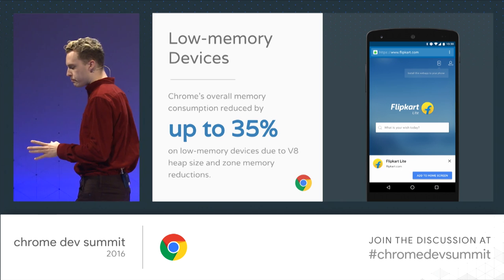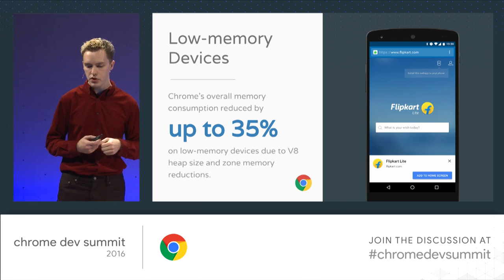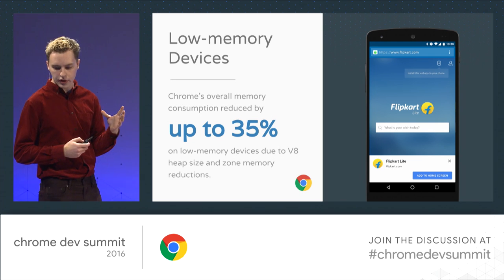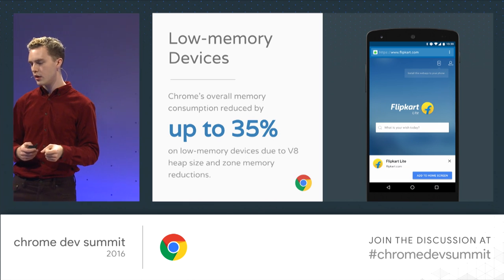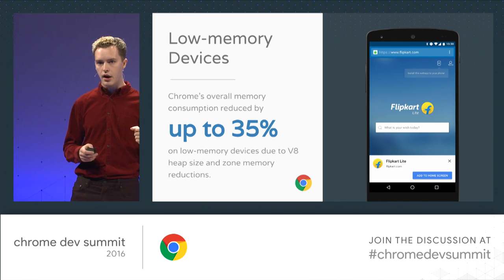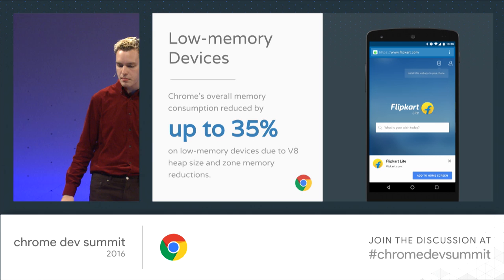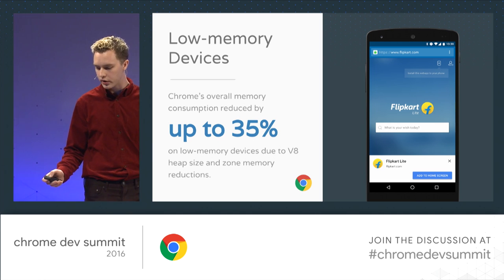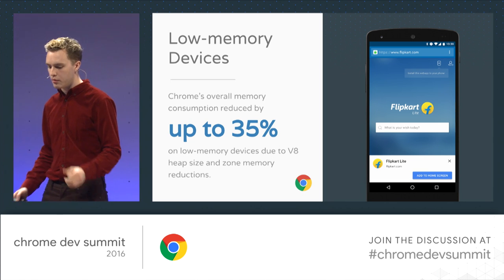There are many aspects to making JavaScript run efficiently on a computer or phone. In particular, the memory consumption of V8 matters a lot, especially on low-end devices — those with less than 512 megabytes of memory. The number of these devices in the wild is incredibly large. We focused on reducing the memory footprint on these devices and actually reduced Chrome's overall memory consumption by 35% by tweaking the heuristics and trade-offs we make in heap size and zone memory.